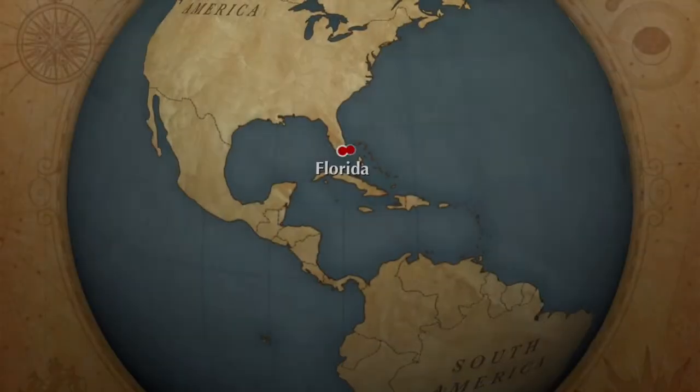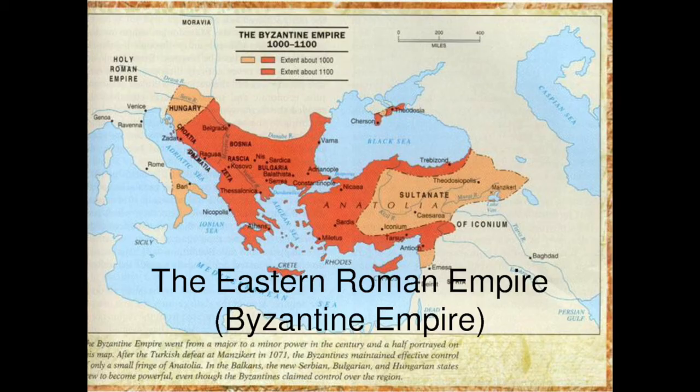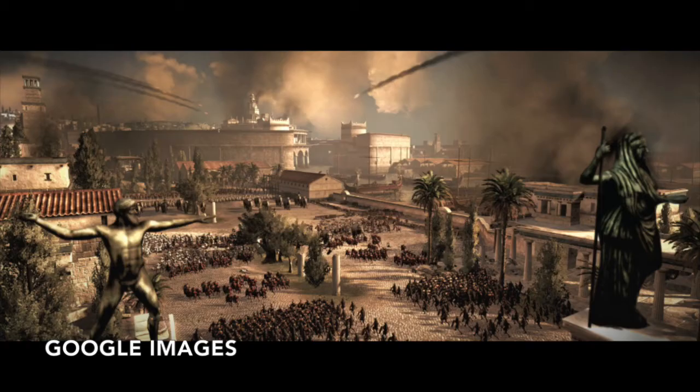The origins of the Byzantine Empire begin as far back as 330 AD, when Roman Emperor Constantine created a new Rome on the site of the ancient Greek colony of Byzantium. In 395 AD, Rome split into two separate empires in order to make it easier to rule. The western portion kept the name of Rome, while the eastern portion took the name of Byzantium.